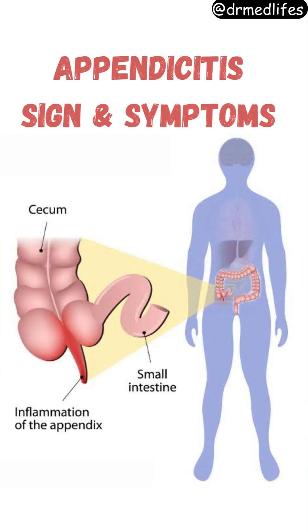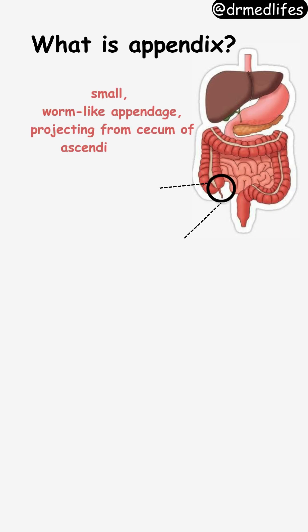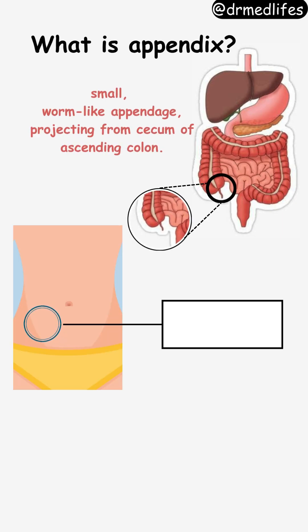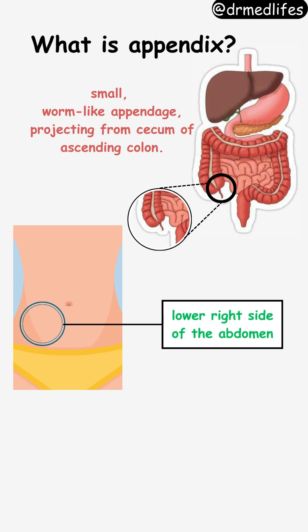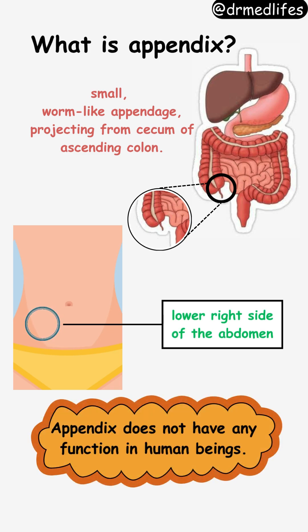Signs and symptoms of appendicitis. What is appendix? Appendix is a small, worm-like appendage projecting from the cecum of the ascending colon. It is situated on the lower right side of the abdomen. Appendix does not have any function in human beings.